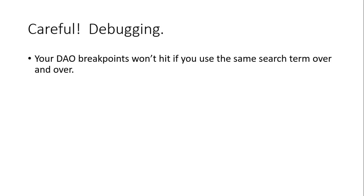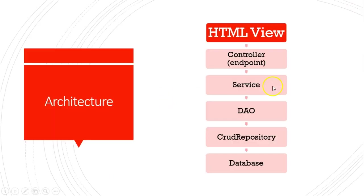One thing I wanted to call out before we get to more advanced caching is to be careful about debugging — this one caught me once. If we apply a cache at the service layer, the very first time we do a lookup it's going to go down and back up the entire stack. The second time we do a lookup with the same ID, it's going to stop at the service layer and return the cached result. The first time I dealt with caching, I set a breakpoint in a DAO layer, saw it hit the first time, then kept requesting the data and could not get the breakpoint to hit.